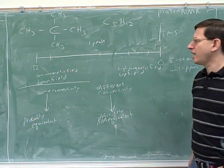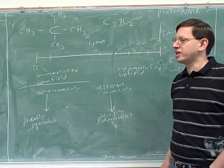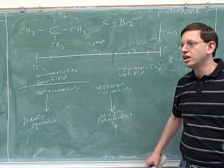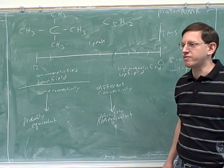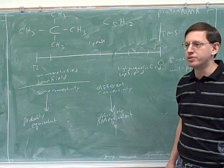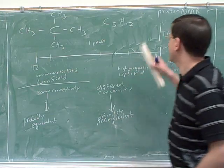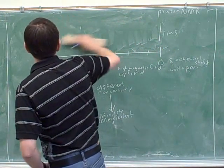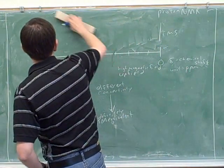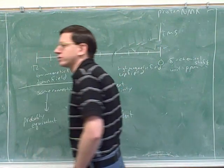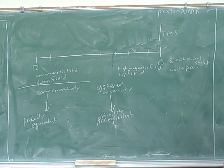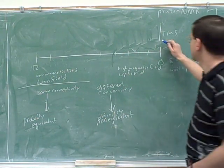Proton NMR gives you four different kinds of information. One key piece is the number of peaks. Now we're going to move on to another type of information: the chemical shift — where we are on the diagram.